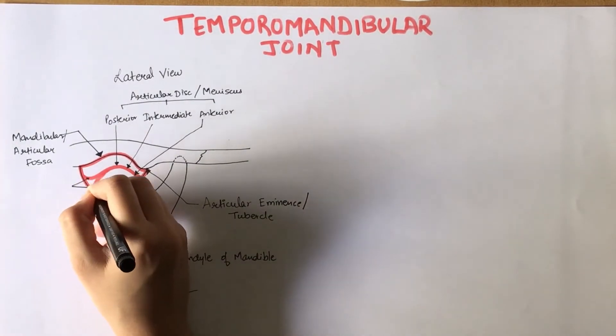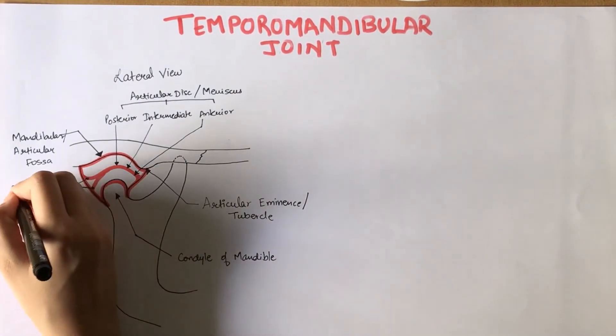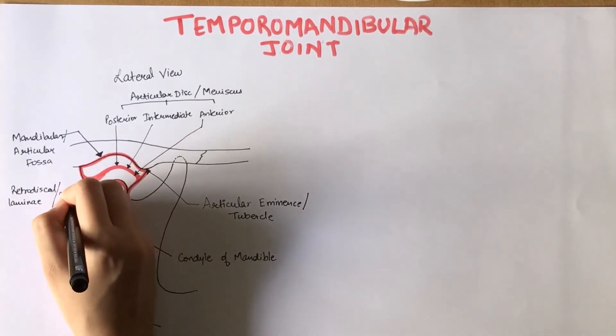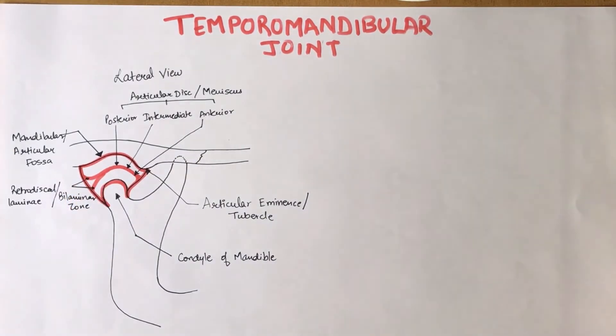Posteriorly, the disc is contiguous with the posterior attachment tissue which is called the retrodiscal lamina or the bilamina zone. Unlike the disc itself, the retrodiscal lamina is vascular and highly innervated, because of which it is often a major contributor to pain of temporomandibular disorders.